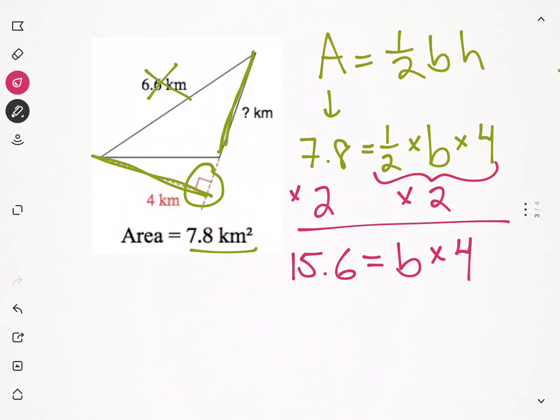And that gives us 15.6 equals base times 4. And the reason, once again, why this happens is, in this first step, we had half of base times height. But when we multiply that by 2, we just have base times height.